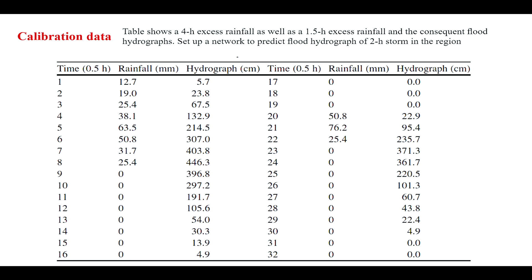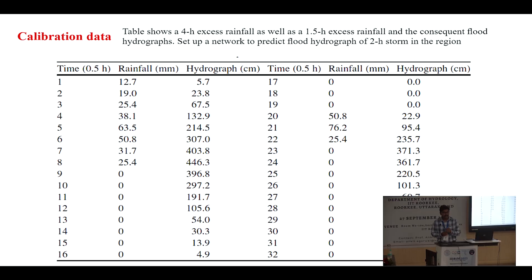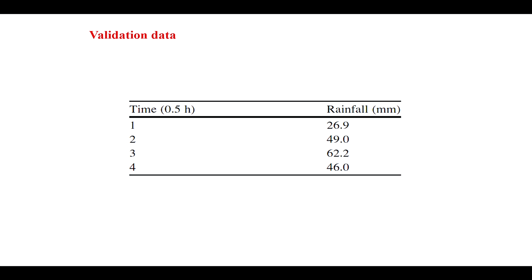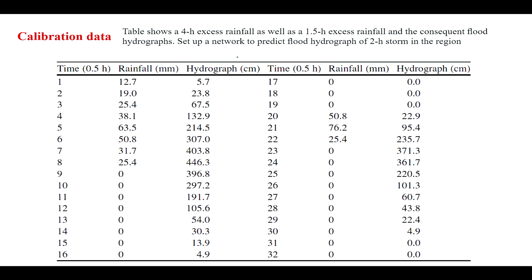The data shown on the screen is a temporal variation of rainfall with respect to time. For the first eight time steps, we have four-hour excess rainfall and the corresponding hydrograph is shown in the third column. At time steps 20 to 22, we have a one-hour excess rainfall and we have the corresponding hydrograph. Using this data, we need to predict what will be the hydrograph for the next two-hour excess rainfall, from time step 33 onwards.